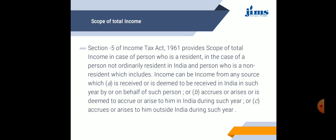Section 5 of Income Tax Act 1961 provides the scope of total income in case of a person who is resident, in case of a person not ordinarily resident in India, and a person who is not resident, which includes income from any source which is received or deemed to be received in India, or accrues or arises or is deemed to accrue or arise to him outside India during such period. Basically, the scope of income depends upon the residential status of an individual.